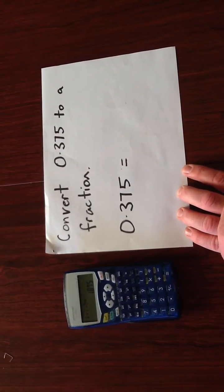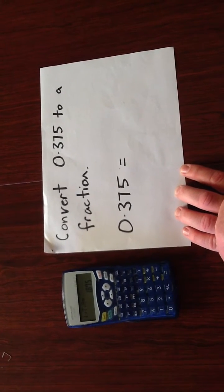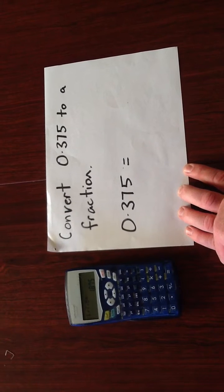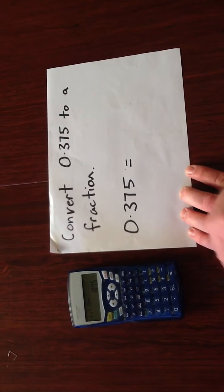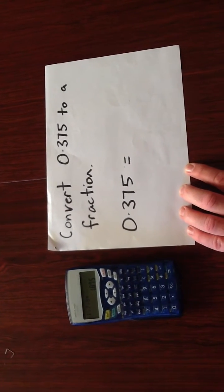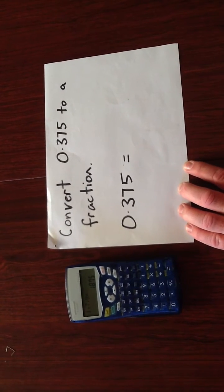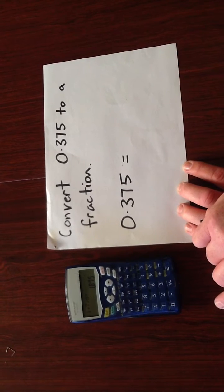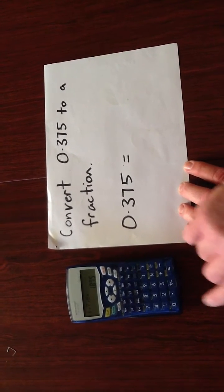The last thing we might need to be able to do is to convert from a decimal to a fraction. This doesn't always work, particularly when it's a complicated decimal or an irrational number or a decimal that's not easy to convert to a fraction. The example I'm using is 0.375.